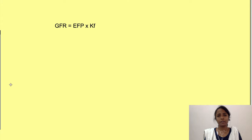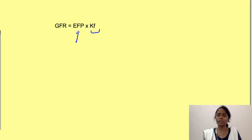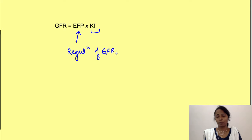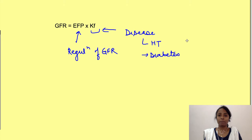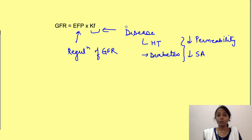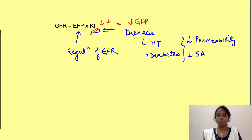The filtration coefficient is not normally used for day-to-day regulation of GFR; the body regulates GFR by changing the effective filtration pressure. However, certain diseases affect the filtration coefficient — in uncontrolled hypertension or diabetes, there is thickening of the glomerular capillary membrane with loss of permeability, and destruction of capillaries causes loss of surface area. Over the long term, if uncontrolled, this leads to decreased glomerular filtration rate, ultimately affecting excretion of waste products.